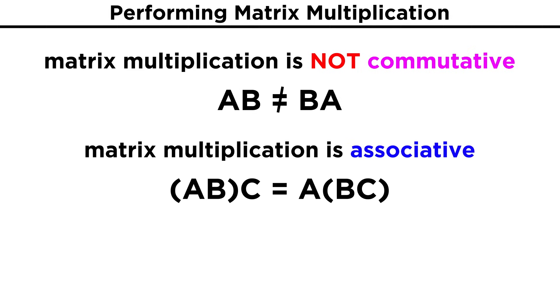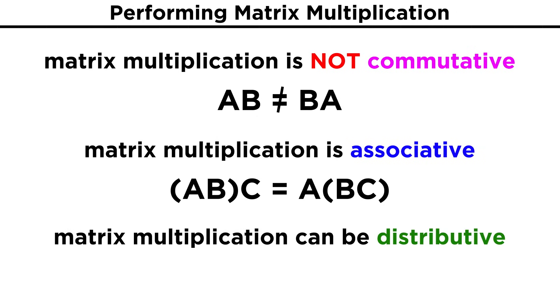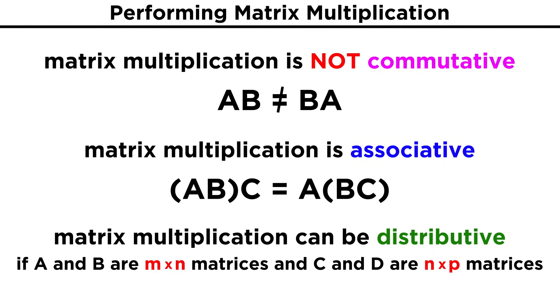However, matrix multiplication is associative, meaning that if we are multiplying three matrices in a specific order, it doesn't matter which pair we multiply first. In addition, the distributive property can apply in some cases. If A and B are M by N matrices, and C and D are N by P matrices, meaning that A and B can each be multiplied by C or D, then A times the quantity C plus D will equal AC plus AD, and the quantity A plus B times C will equal AC plus BC.